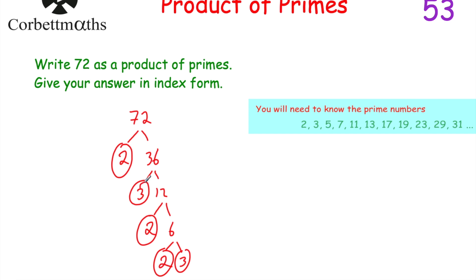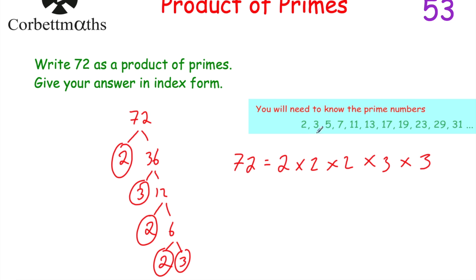Let's just check it: 2 times 3 is 6, times 2 is 12, times 2 is 24, times 3 is 72. So 72 is equal to 2 × 2 × 2 × 3 × 3 — writing them in order. The question said to give our answer in index form. We've got 2 × 2 × 2 which is 2 cubed, multiplied by 3 × 3 which is 3 squared. So 72 as a product of primes in index form is 2³ × 3².